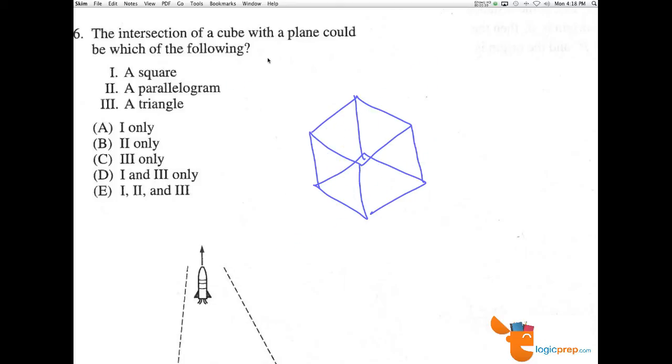Now, the question is, could it be a triangle? And the answer is, definitely. If we cut on a corner here, the intersection would really be through these three points here. And if we chop that corner off, we have that triangle right there.